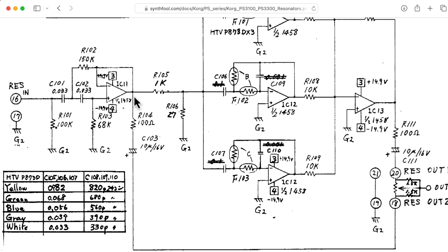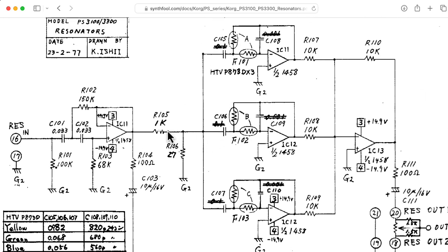And then the other path just bypasses those filters entirely, and the user can use a potentiometer to morph between those two. I should mention that before we go into the filter bank here, we have a resistive divider that's going to cut the signal going into the filters quite a bit.